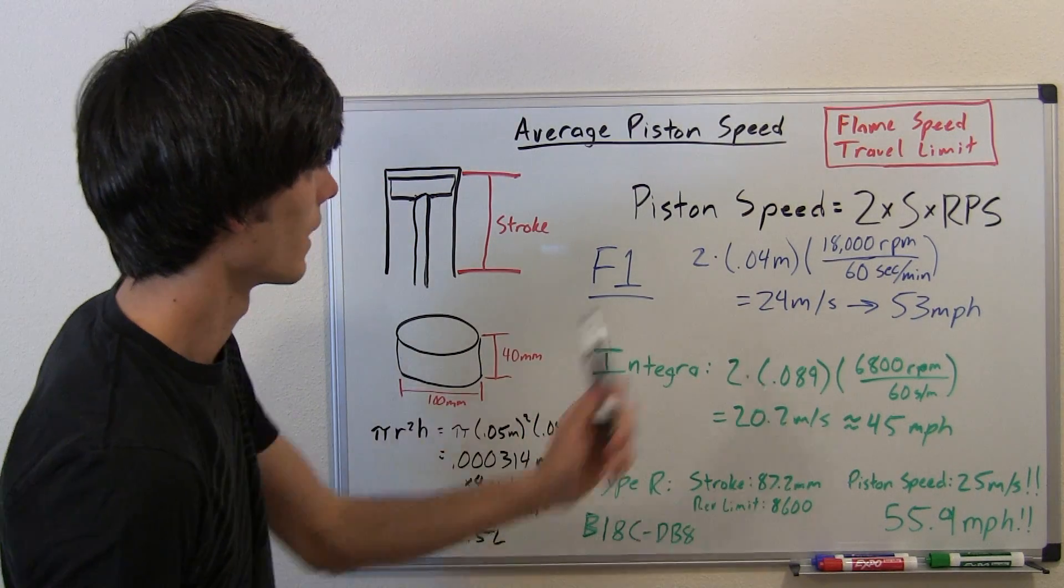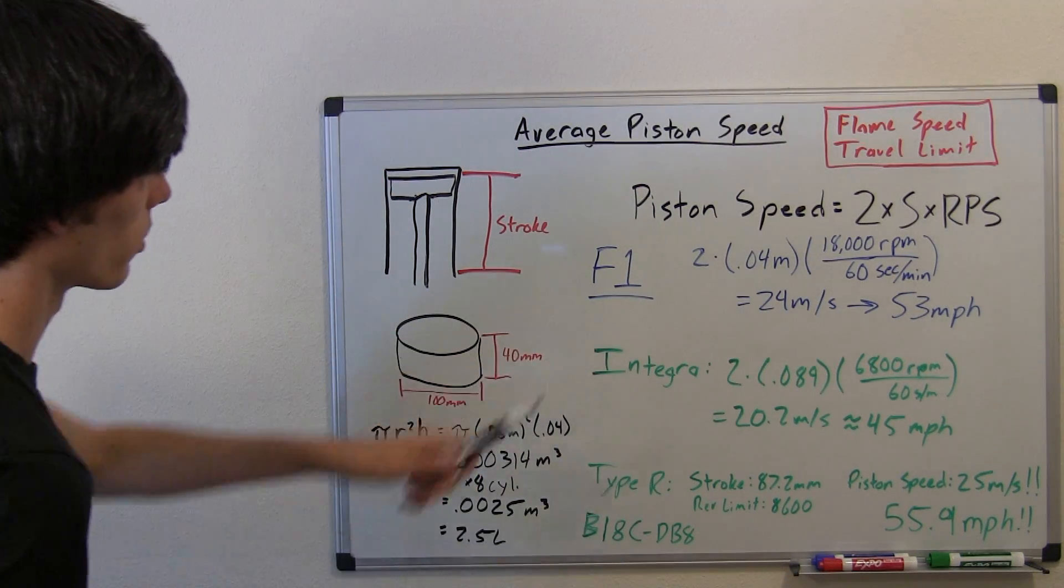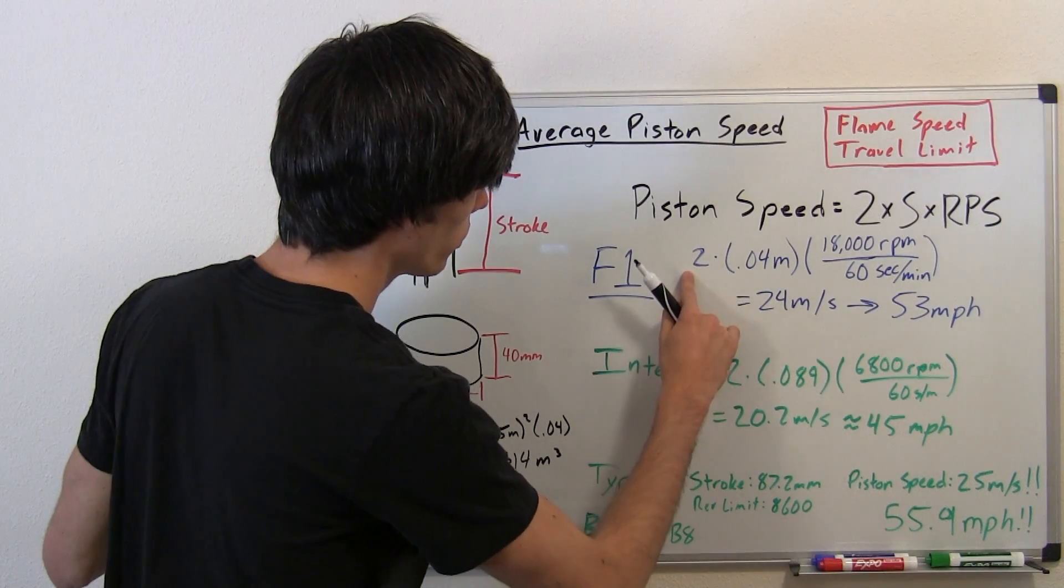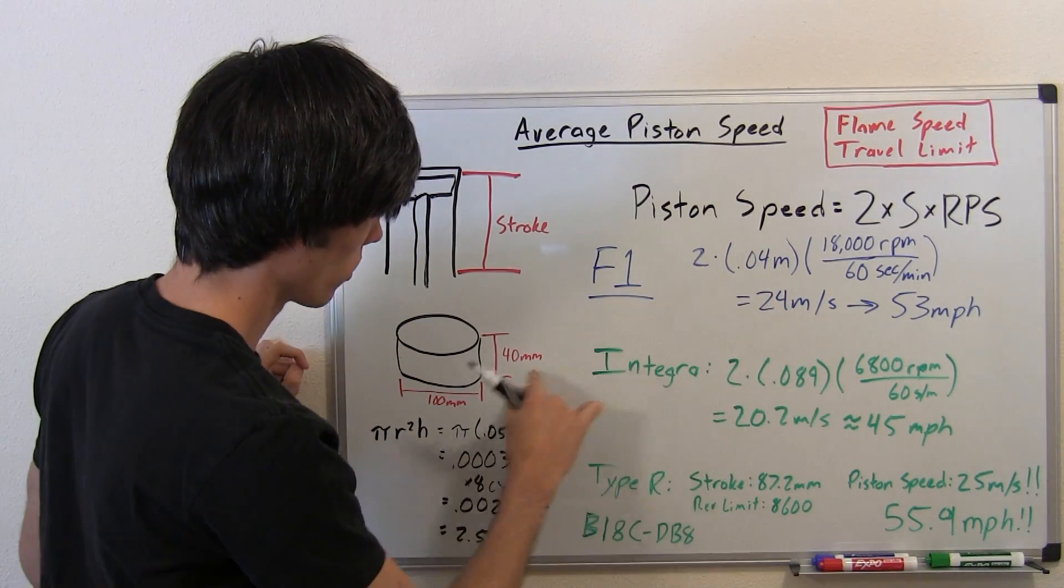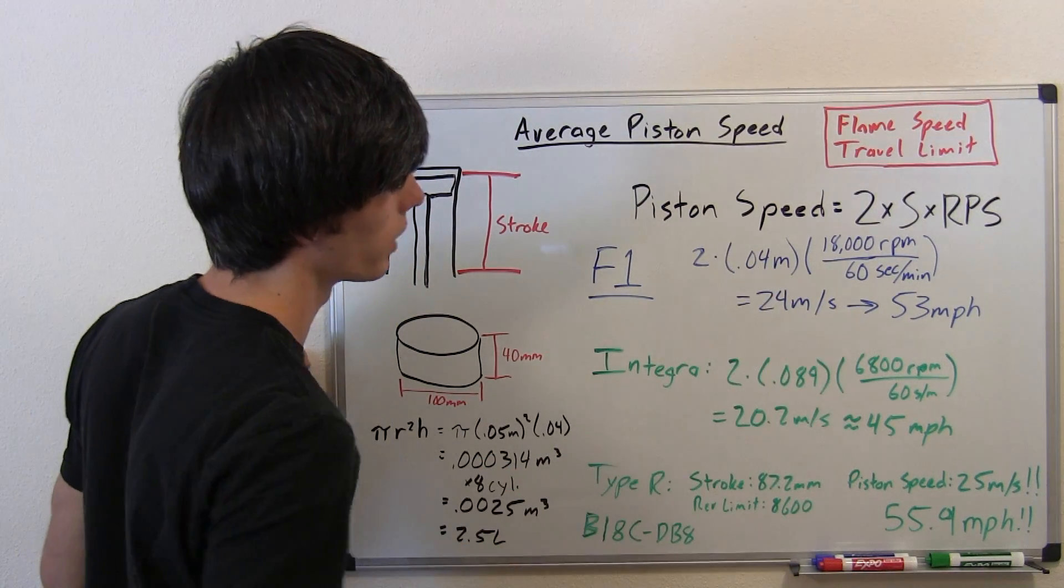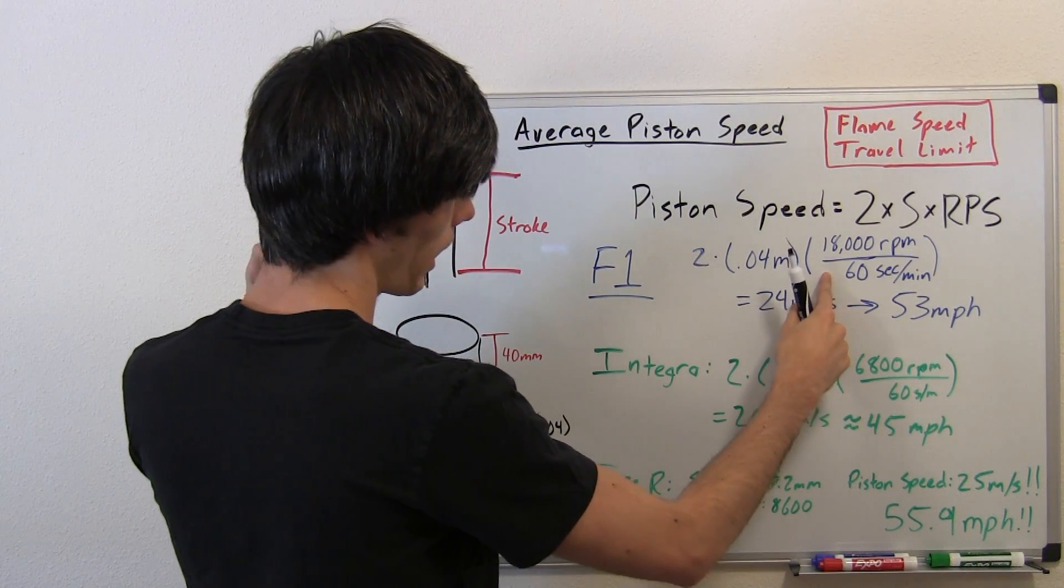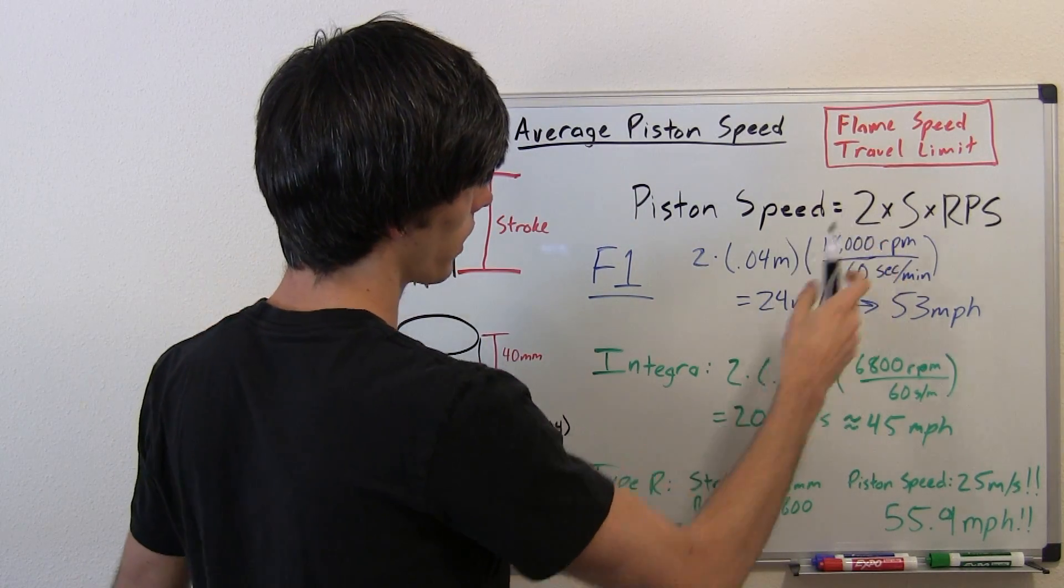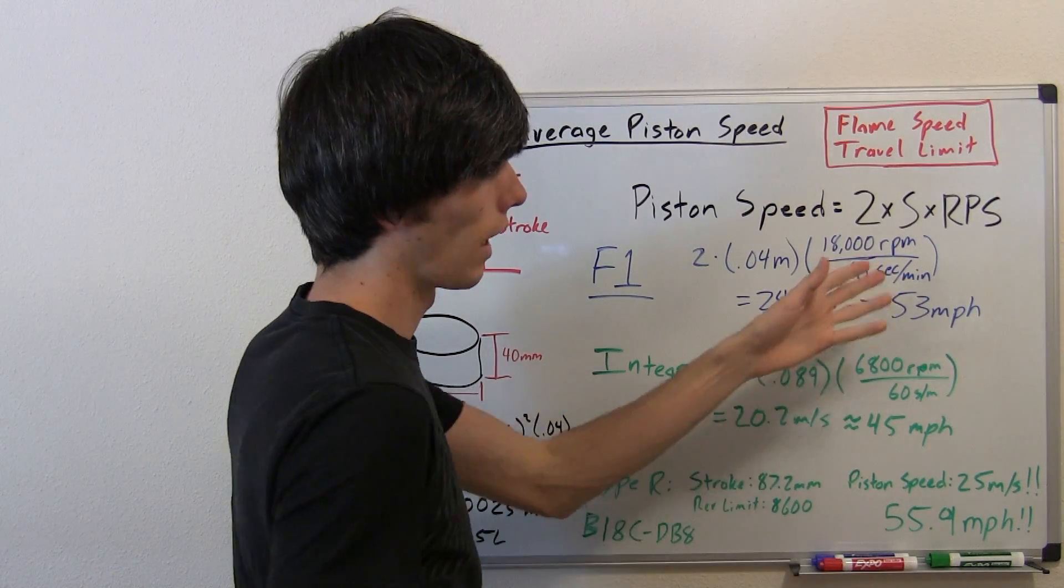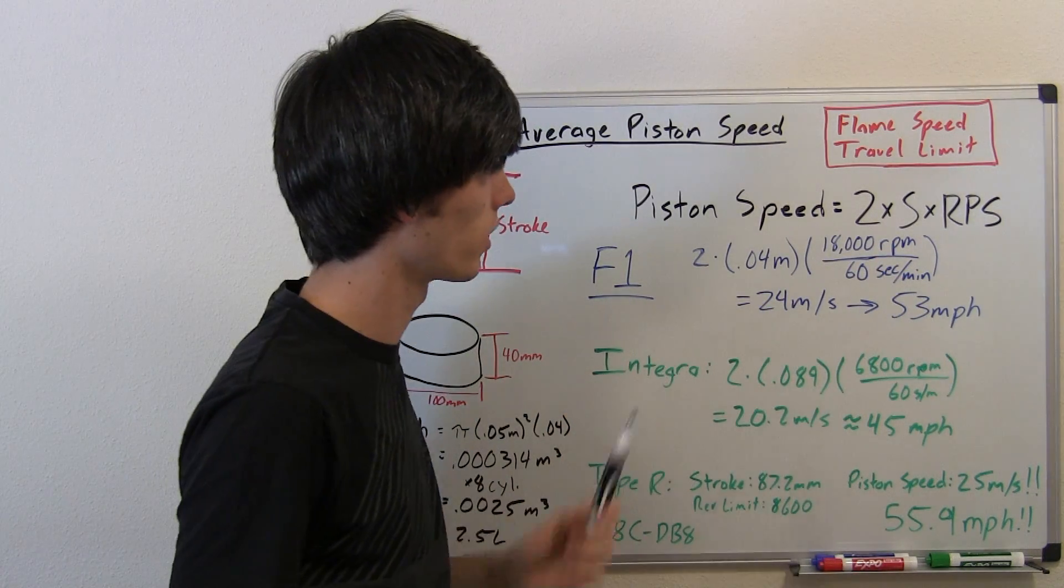Let's find out the piston speed of a Formula One vehicle. We've got two times the stroke, which was 40 millimeters, so 0.04 meters, times the speed, the amount of times that happens per second. So, you've got 18,000,